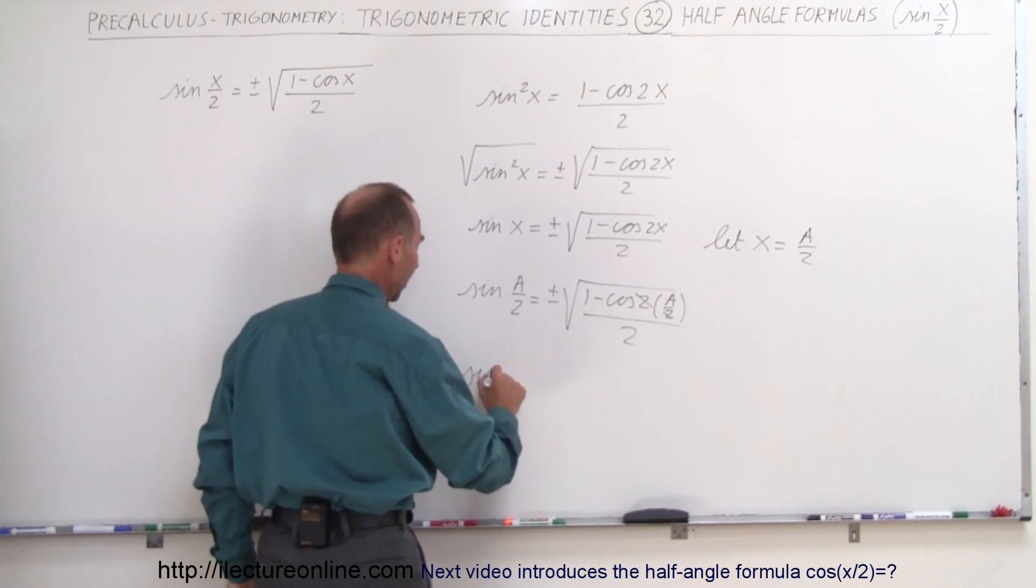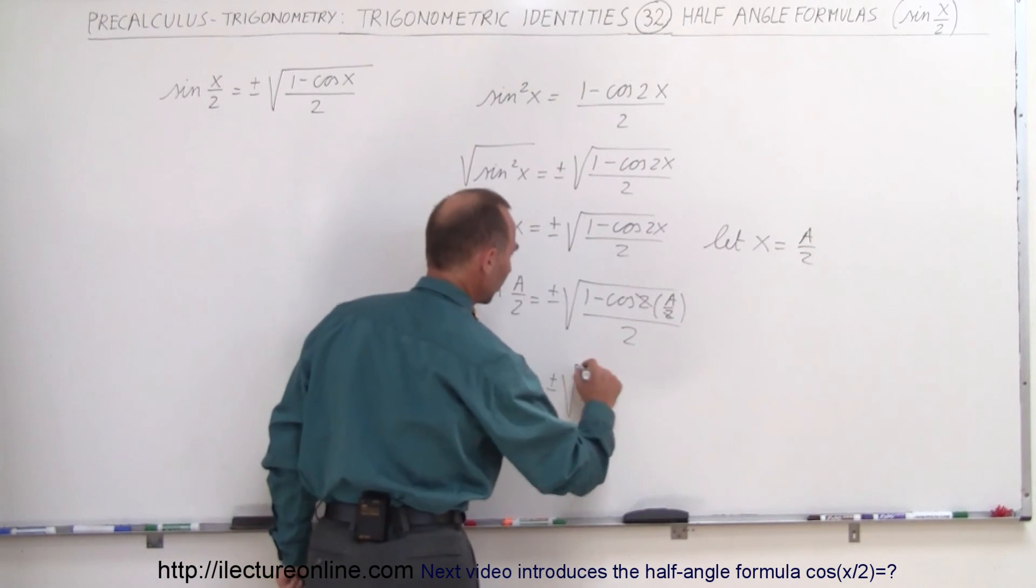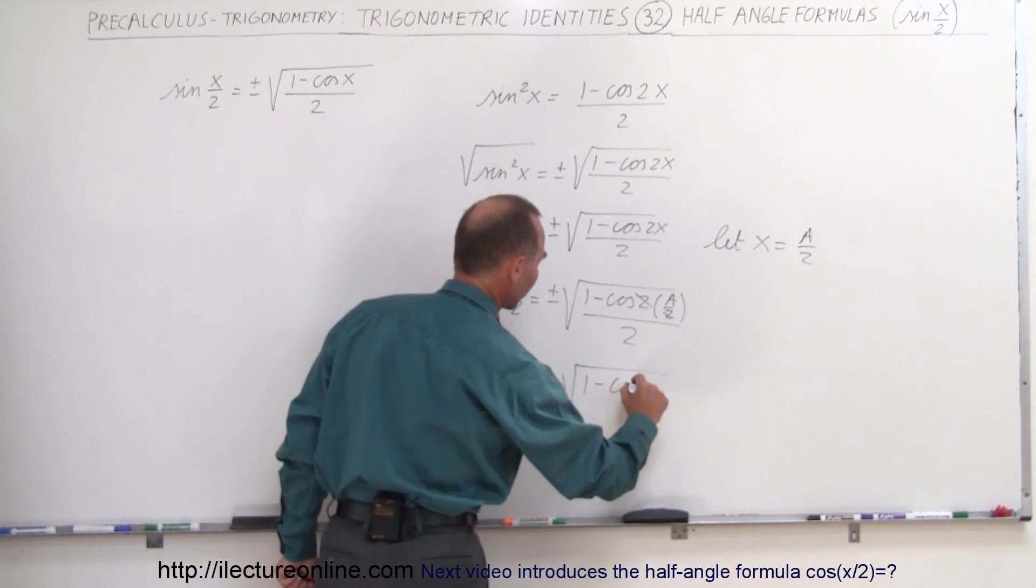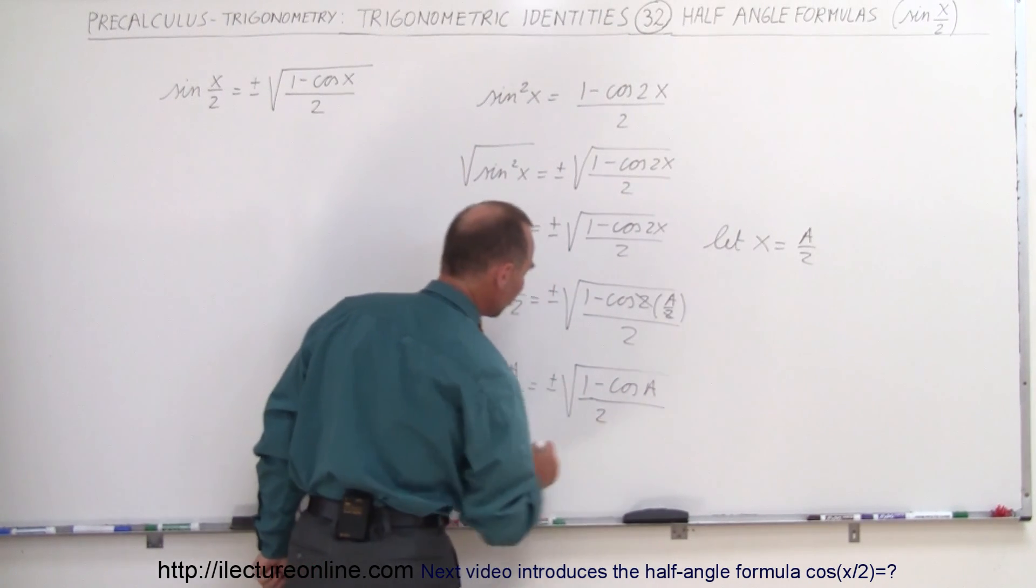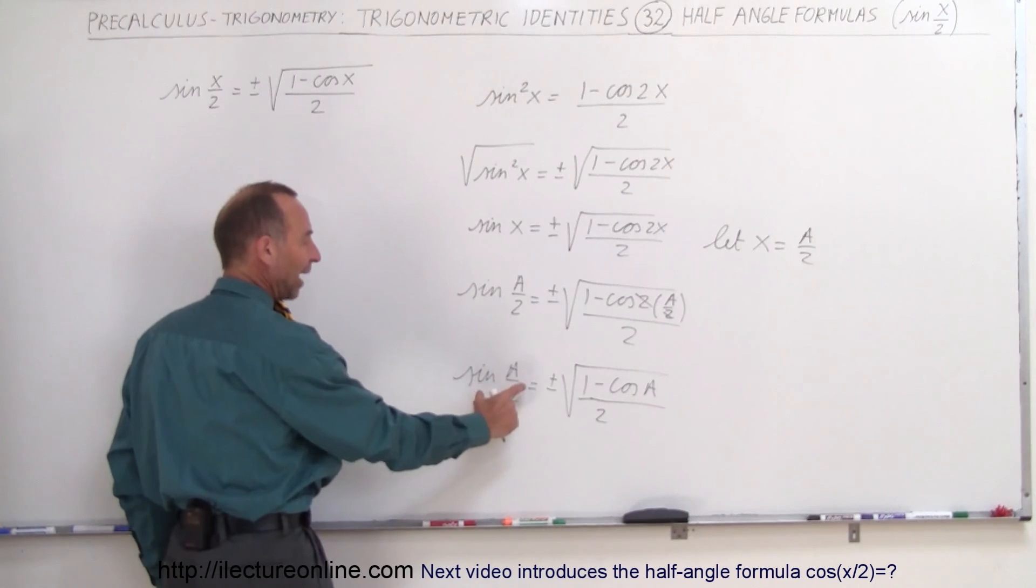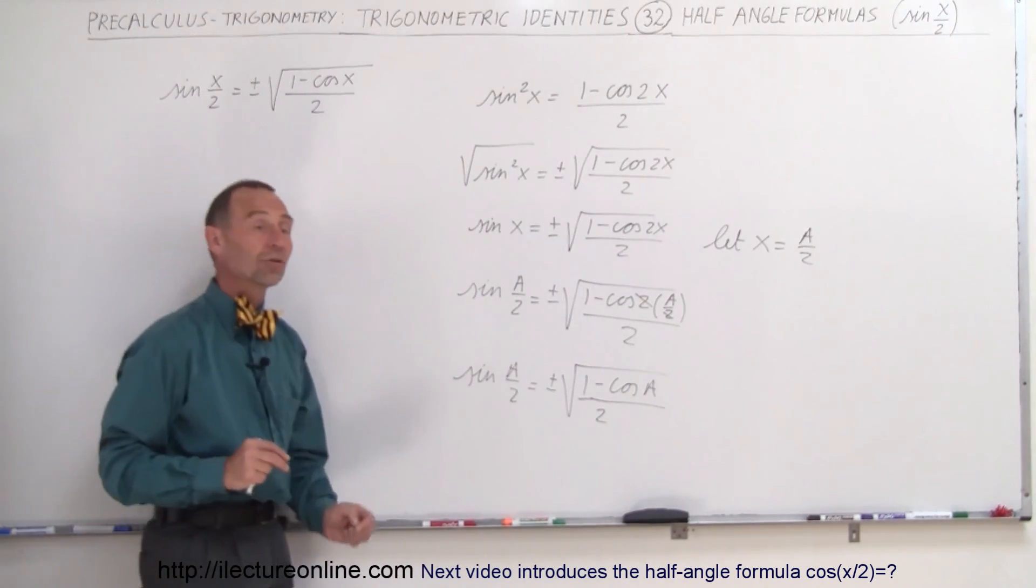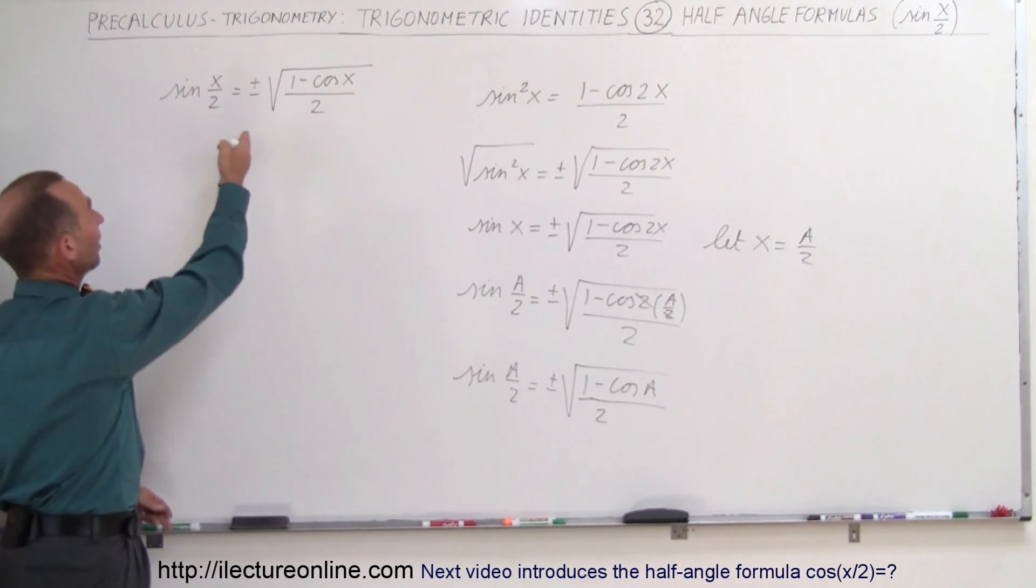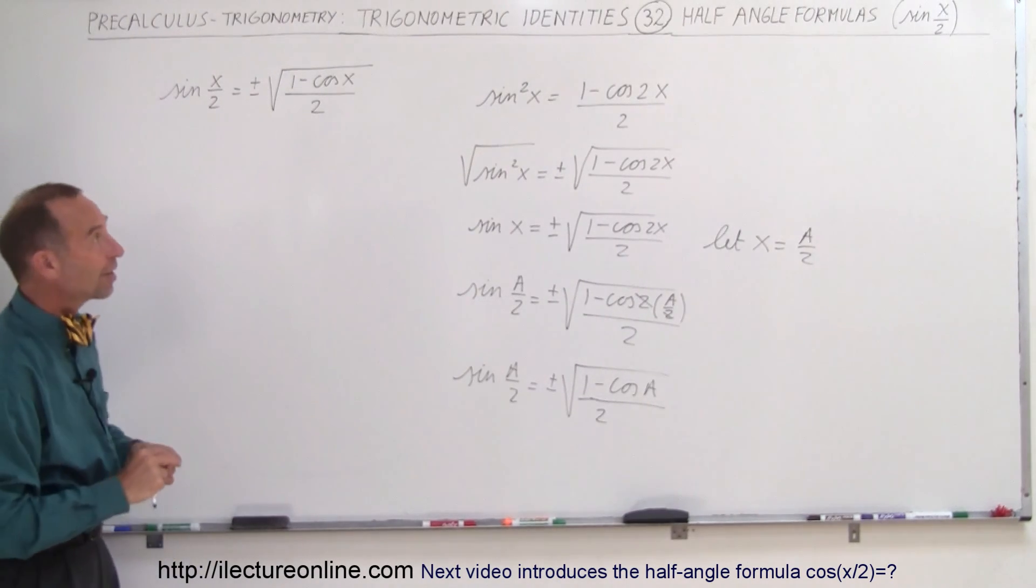Which means that the sine of a half angle is equal to plus or minus the square root of 1 minus the cosine of a divided by 2. Which means we've converted something of a half angle, the sine of a half angle, to something with a whole angle, in this case a cosine of a whole angle, which is exactly what we have over there. That's where that comes from. That's how we got the half angle formula for the sine of x over 2.